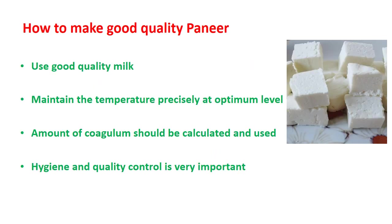Now once again we will see how to make good quality paneer. First, use good quality milk — it should not be already acidified, sour, or old, and it should be raw. Maintain the temperature precisely at the optimum level. The amount of coagulant should be calculated and used at the proper level. The coagulant solution should also be at the same temperature; if it is too cold, mixing it will reduce the effective temperature. Hygiene and quality control are also very important, and proper pasteurization ensures no pathogens survive.